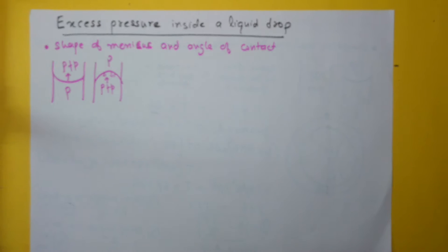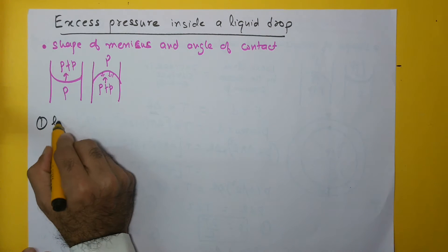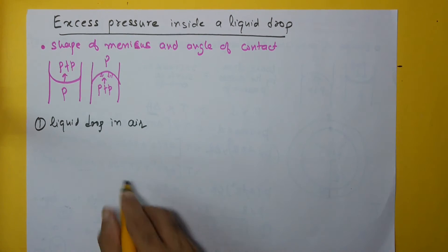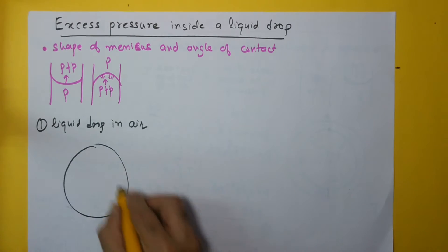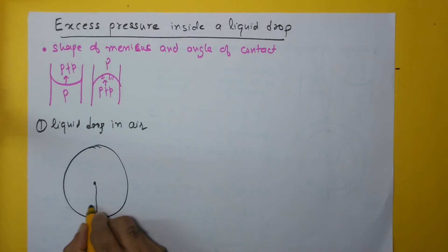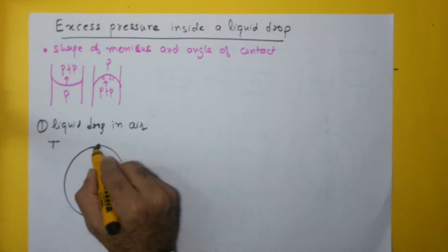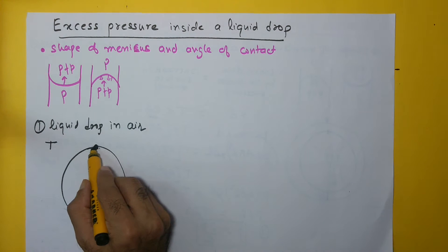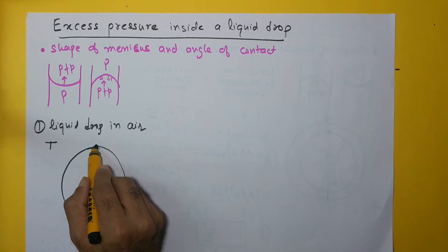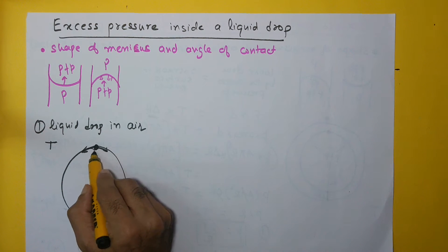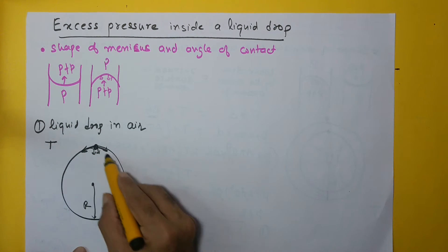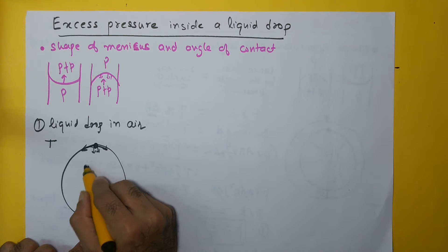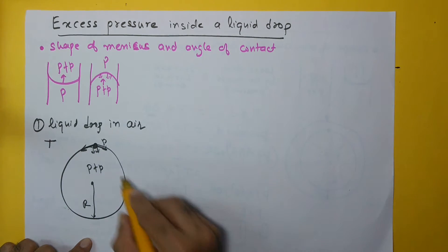Now we will look at what happens when we have a liquid drop in contact with air. I will draw an exaggerated view of a liquid drop. Let's say the radius is R and the surface tension is T. If you look at one particular molecule on the surface, it is under the effect of surface tension — the surface tension forces are trying to pull it inward, trying to decrease the area, so the net force acts in the downward direction. This is the concave side, so the pressure inside the drop would be more.